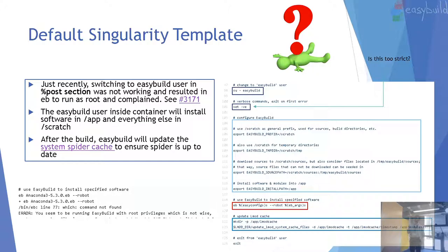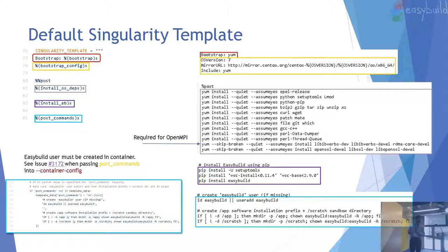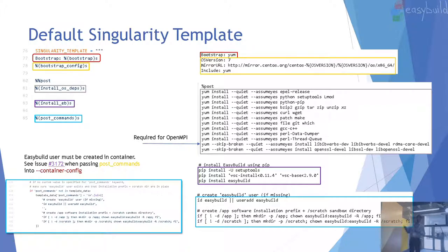A question: why is pip missing if there's a yum install python-pip in the post section? The answer is that was with Docker and CentOS, and the issue is they could be using different YUM repos where python-pip is not found.